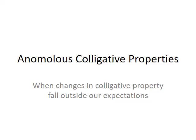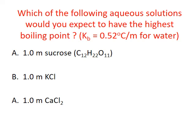Let's look at an example. Which of the following solutions would you expect to have the highest boiling point? A 1.0 molal sucrose solution, a 1.0 molal potassium chloride solution, or a 1.0 molal calcium chloride solution? To answer this question, we must first consider the boiling point elevation formula. Notice that boiling point elevation, delta T, is dependent only on two factors.